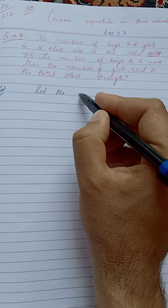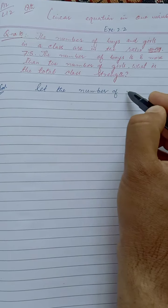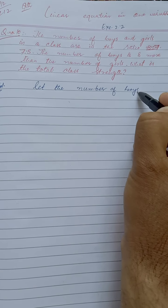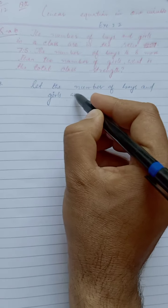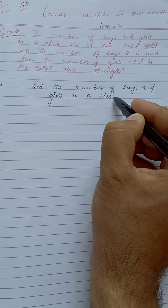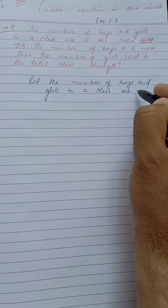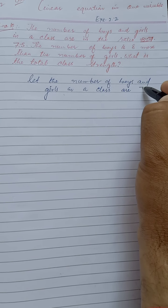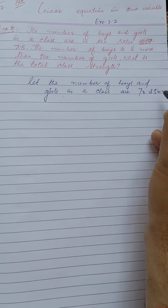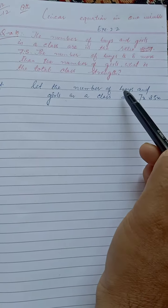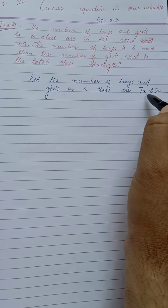Let the number of boys and girls in a class be 7x and 5x, because they are in the ratio 7 is to 5. So the number of boys is 7x and the number of girls is 5x.